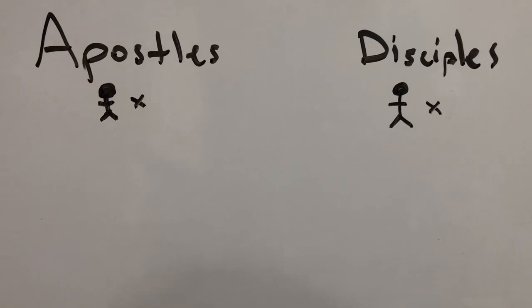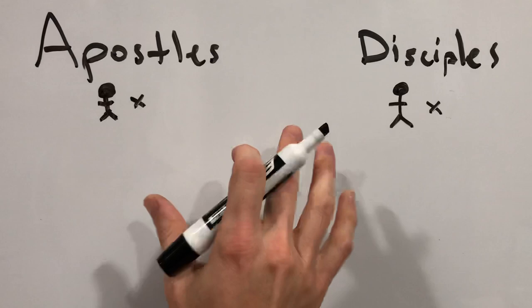This is Jared Dees from TheReligionTeacher.com. These two terms are both used to refer to the followers of Jesus — there's the apostles, and then there's the disciples.